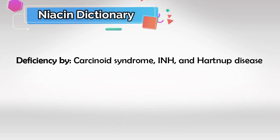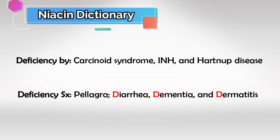Niacin deficiency can be acquired by using isoniazid, carcinoid syndrome, or Hartnup disease. Remember that B3 has three symptoms when it's deficient: diarrhea, dementia, and dermatitis.